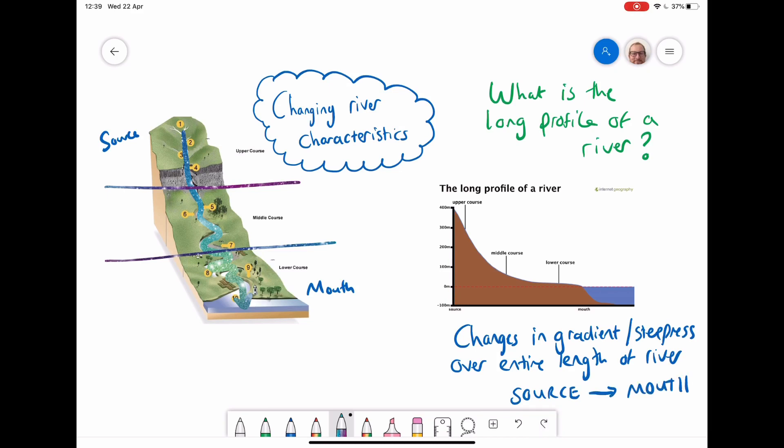So on the diagram that I've drawn, it's essentially the same picture as the one on the left but we're looking at it from a side angle. So I can split it again into upper course, middle course and lower course.